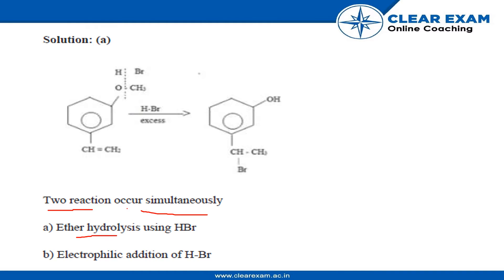First is the ether hydrolysis using HBr and the second is electrophilic addition of HBr. In the question, we are given excess HBr. The first reaction that will take place is that the OCH3 bond will break. In the final product, we will obtain the alcohol group along with benzene plus CH3Br.